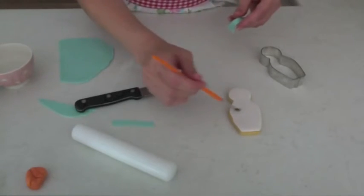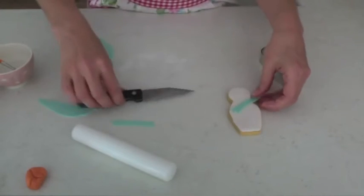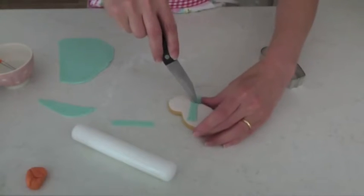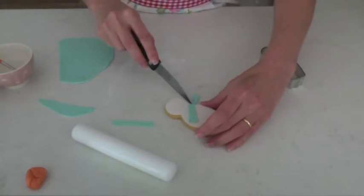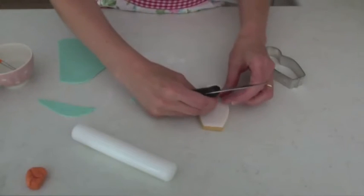And then just use a bit of water to adhere it here to the cookie, and then use the sharp knife to trim off the edge. And then I'll just do the other side the same.